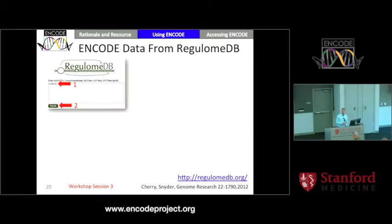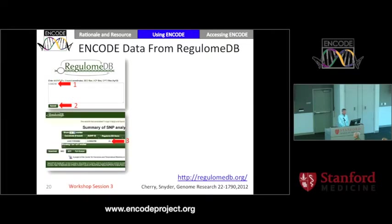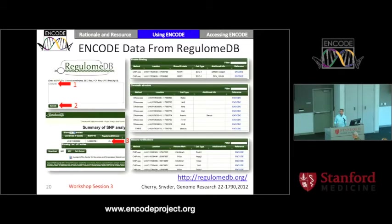Similarly, Mike Snyder's group and Mike Cherry's group, both at Stanford, developed RegulomDB. In a different way, this analyzes ENCODE data, Roadmap data, and some other data sources. You can put in genomic coordinates or SNP IDs and click submit. Initially, you're presented with a score — the likelihood that the genomic region you're looking at has regulatory potential — and then you can drill down and see the individual underlying data and see why that assessment came about.